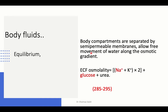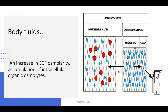Body compartments separated by semi-permeable membranes allow free movement of water along the osmotic gradient. Serum osmolarity is calculated as: (sodium + potassium) × 2 + glucose (mg/dL). Normal serum osmolarity is 285 to 295. The main determinants of serum osmolarity are sodium and glucose levels. Hypernatremia and hyperglycemia both result in higher serum osmolarity — this is very important.